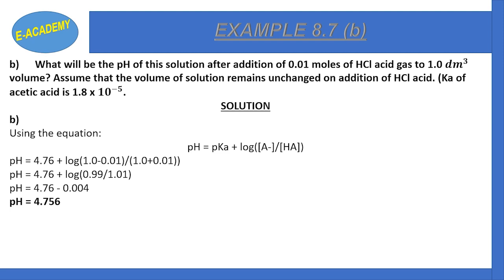The acetate concentration decreased by 0.01 moles (1.0 − 0.01) and acetic acid increased by 0.01 moles (1.0 + 0.01). Therefore, our pH after HCl addition is 4.756.